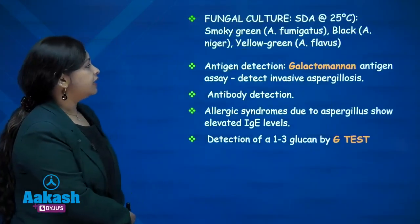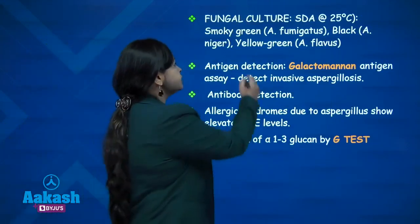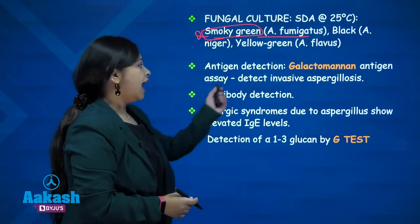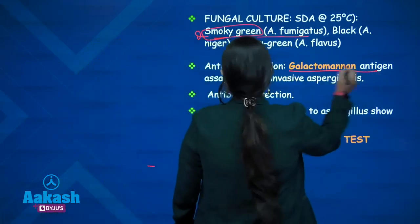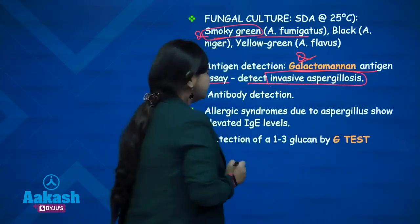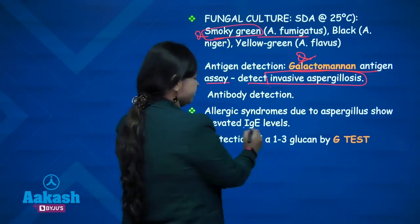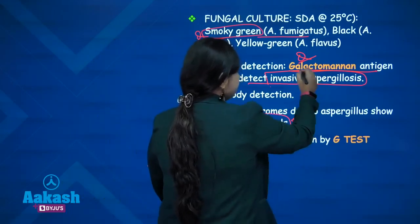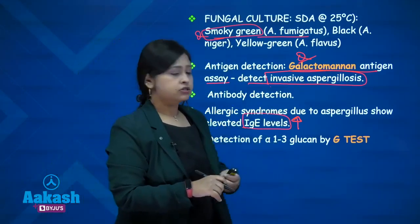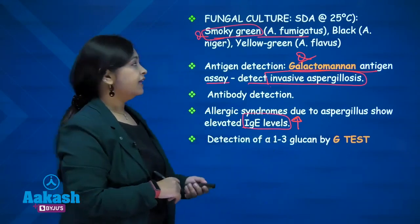Coming to the culture of aspergillosis: fungal culture done on SDA at 25°C produces pigmented colonies. Smoky green is characteristic of Aspergillus fumigatus, the most common species encountered. Antigen detection can be done — galactomannan antigen assay indicates invasive aspergillosis. Antibody detection: allergic syndromes show elevated IgE levels. Detection of alpha-1,3-glucan is done by the G-test, already discussed under candidiasis.